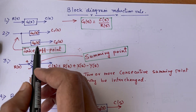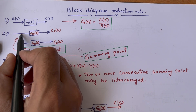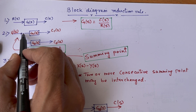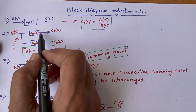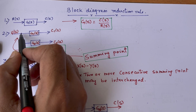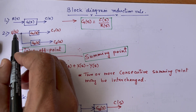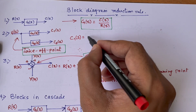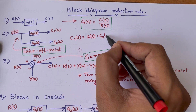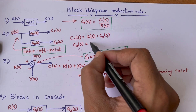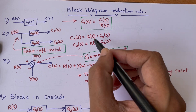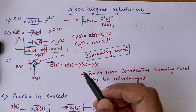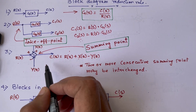The takeoff point means the output may branch in different directions but the input signal remains unchanged. For example, if R(s) is the input, then R(s) is the same for both G1(s) and G2(s). Even if we add further takeoff points, R(s) remains the same. So C1(s) = R(s)·G1(s) and C2(s) = R(s)·G2(s). This common input for multiple blocks is what defines a takeoff point.